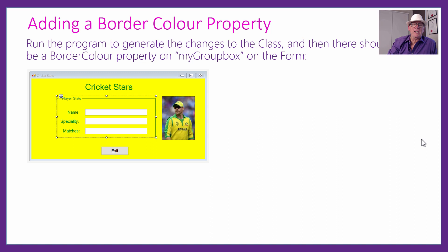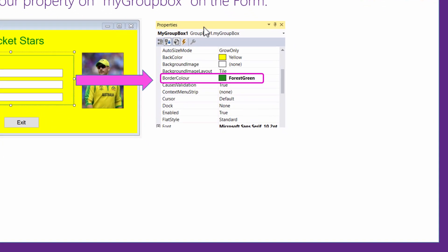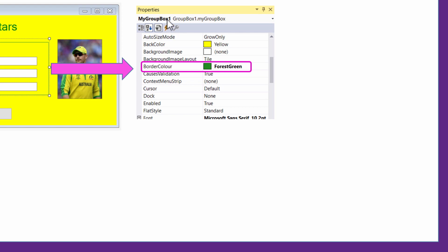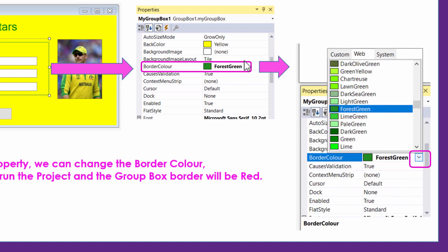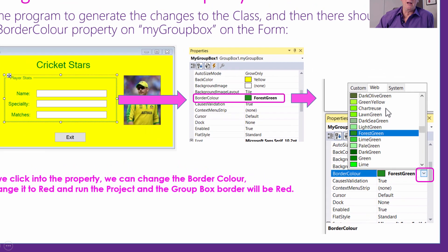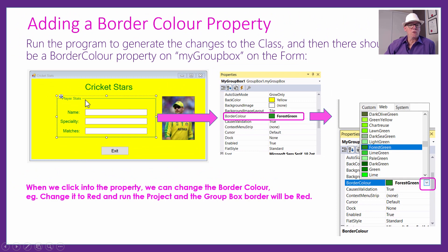So if you run the program to regenerate the class, what will happen is if you click onto your GroupBox on the form so it's activated, and go over and check out its properties for the MyGroupBox customized one, it will now have a border colour property. And you can click in that property and use the arrow to bring up a whole bunch of different colors. You can pick a red color on the color picker and then run it again and the GroupBox will change to red. So you've actually got full functionality on the GroupBox of having a border color.